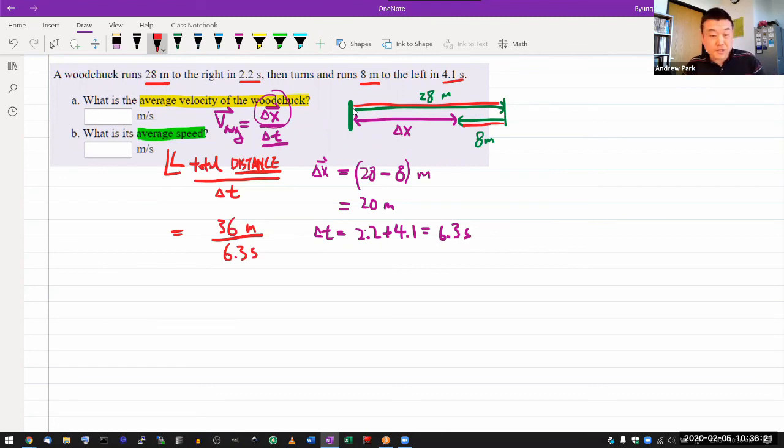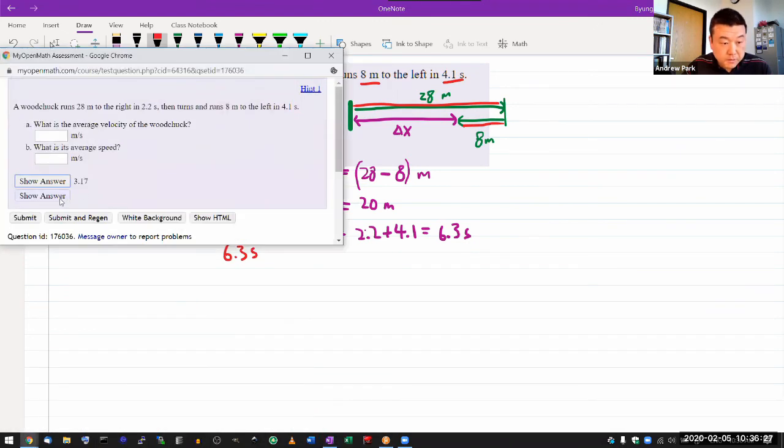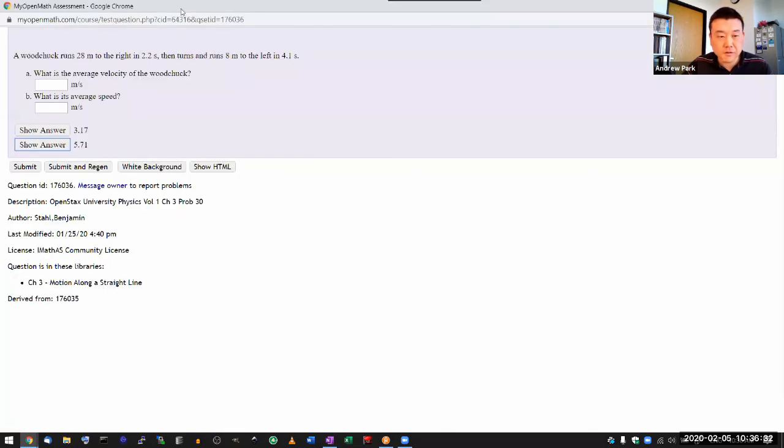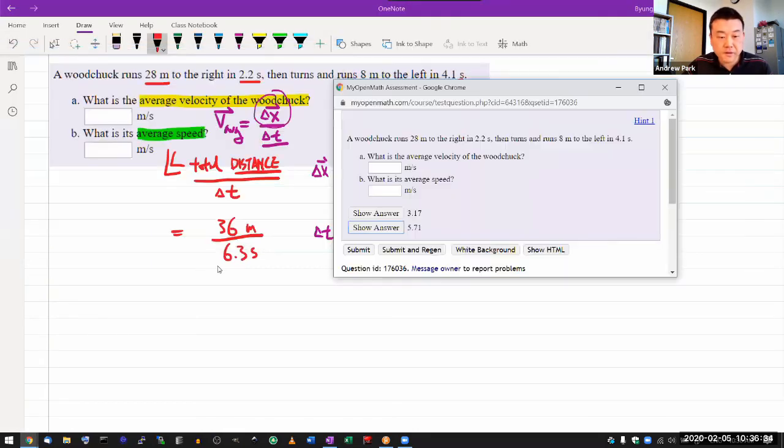So let me just look up the answer. It should be close to 6 meters per second. So close to, yeah, I mean, 5.71 rounded up to 6. If you actually plug the numbers into calculator, that's what you're going to see. So that's the distinction.